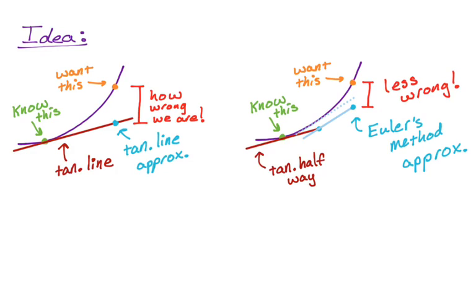And so ideally what we would do is maybe divide the distance between the x coordinate we know and the x coordinate we want, maybe divide that by 1000 and do this 1000 times. So we're getting really tiny tangent segments. But in practice, we won't be able to do that. We'll do like one or two or maybe three steps.